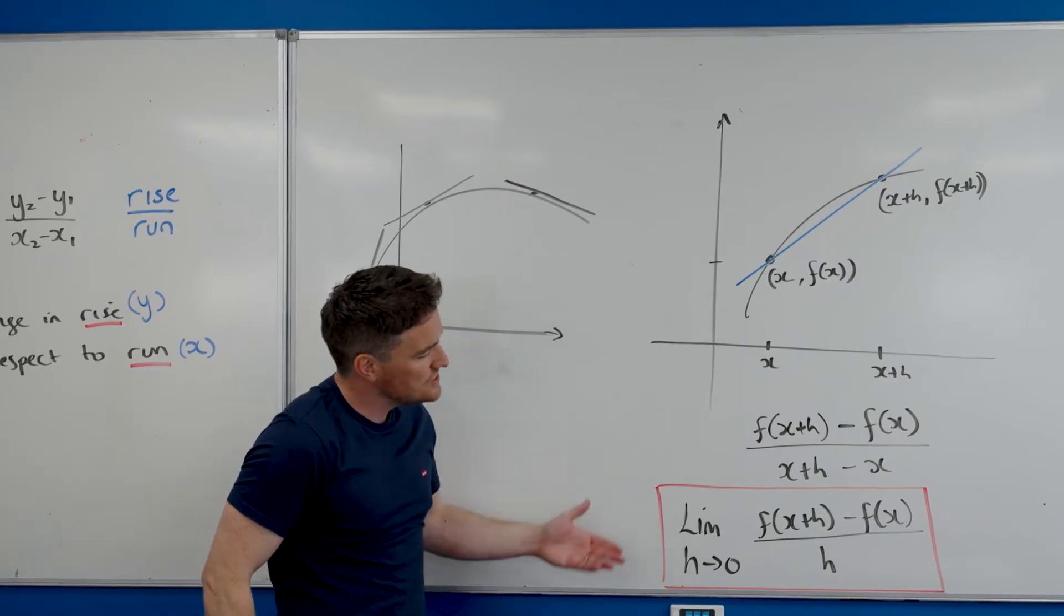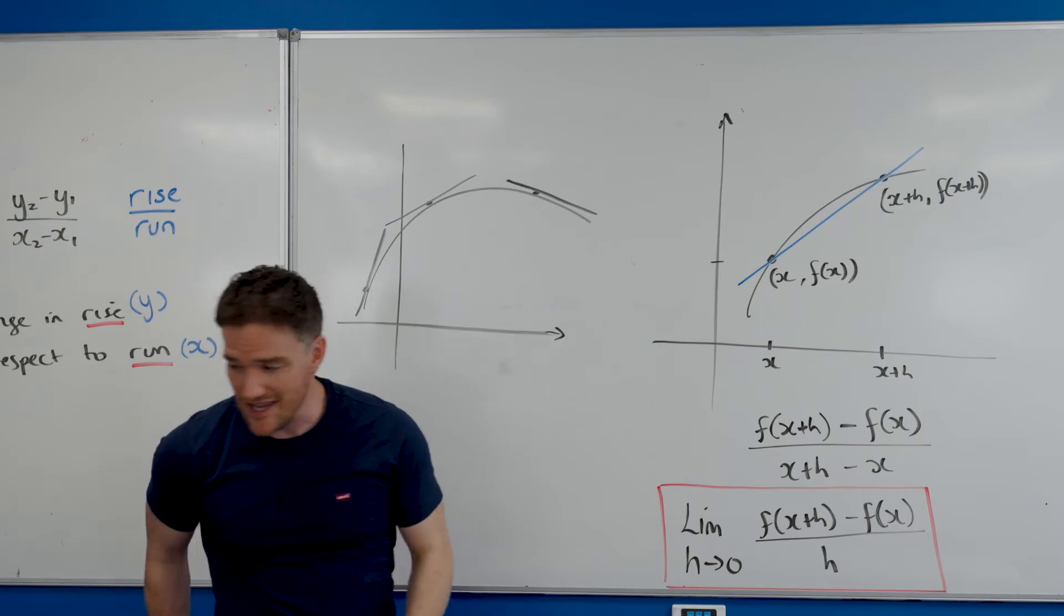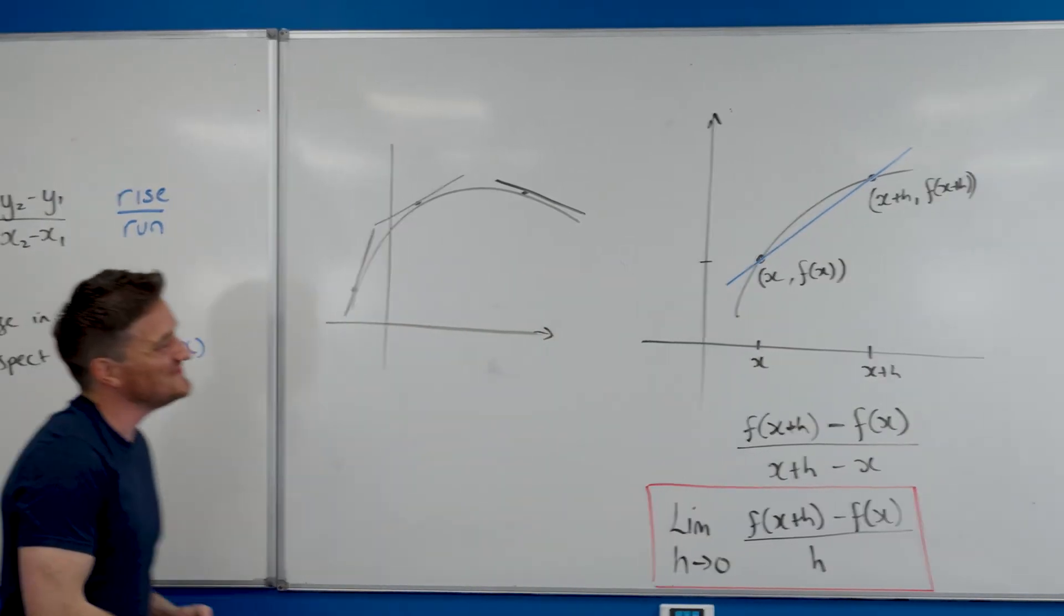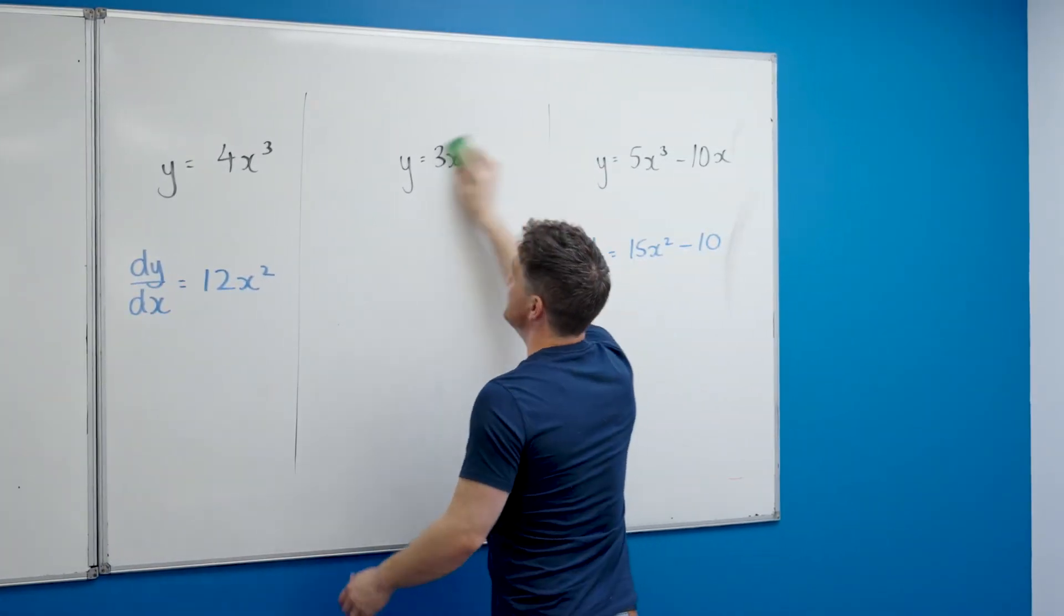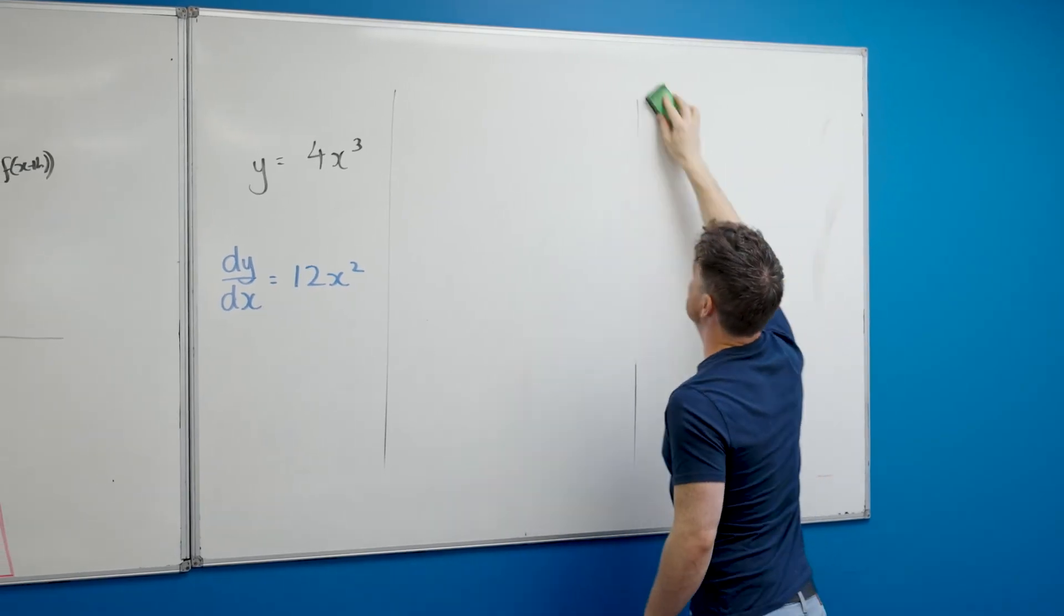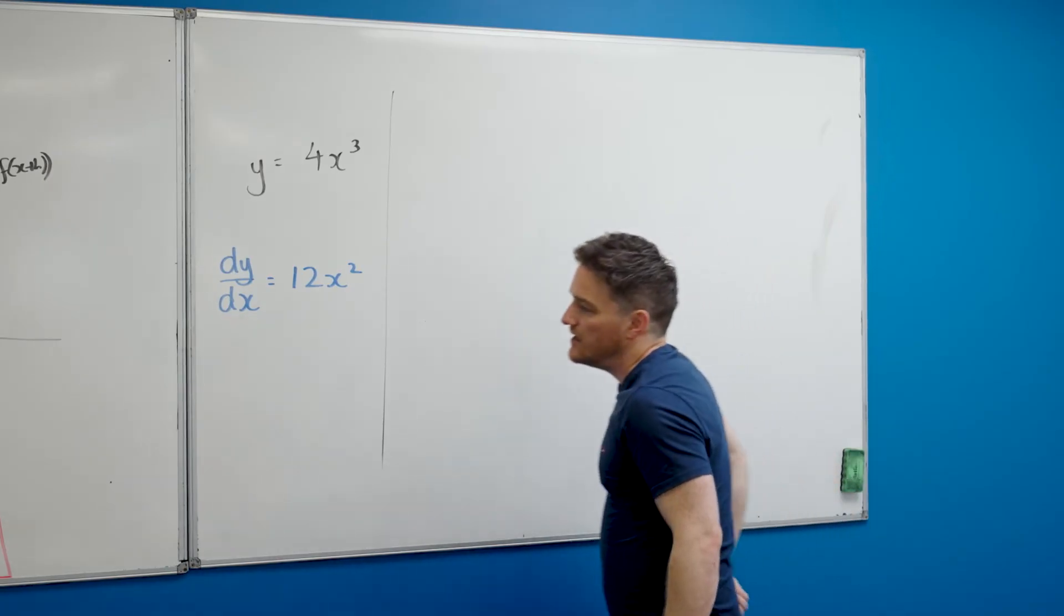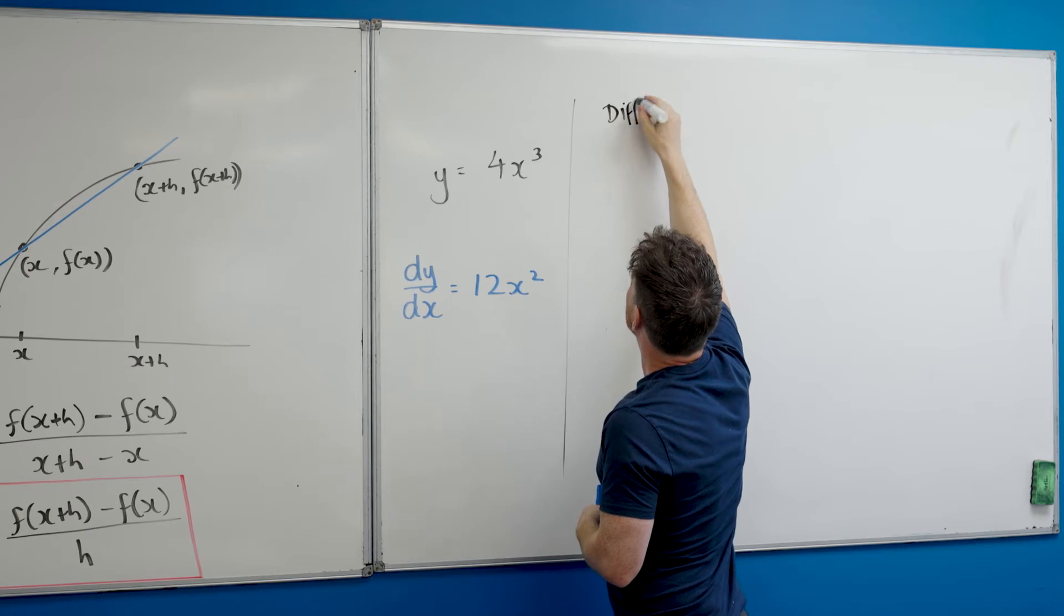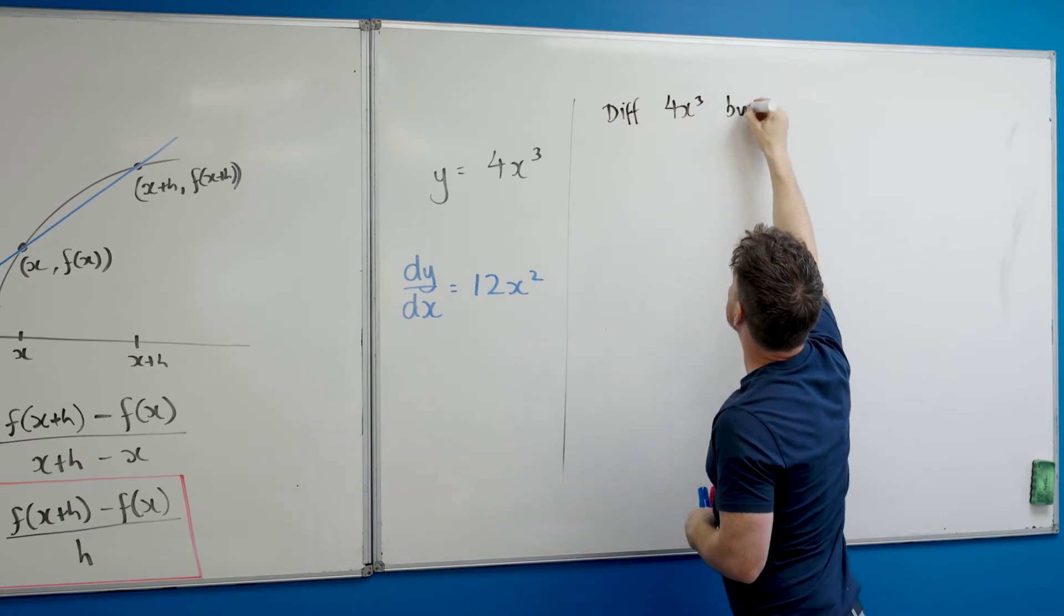I'm going to take a look at the very first one there and I'm going to solve it out with first principles. How would this work? You'll notice I've used the notation here dy/dx, and that's just another way of saying differentiate, which I'll show you two ways we can have it written. Here I'm going to say let's differentiate this—that's a shorthand—differentiate 4x cubed by first principles.